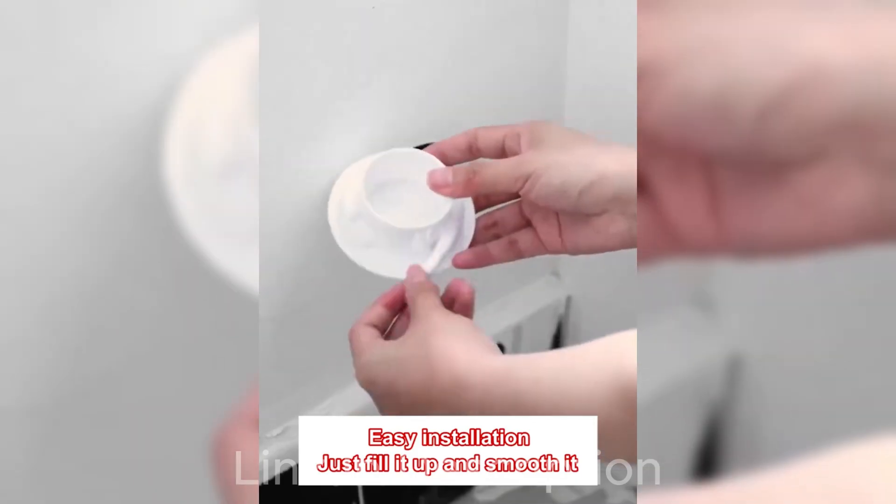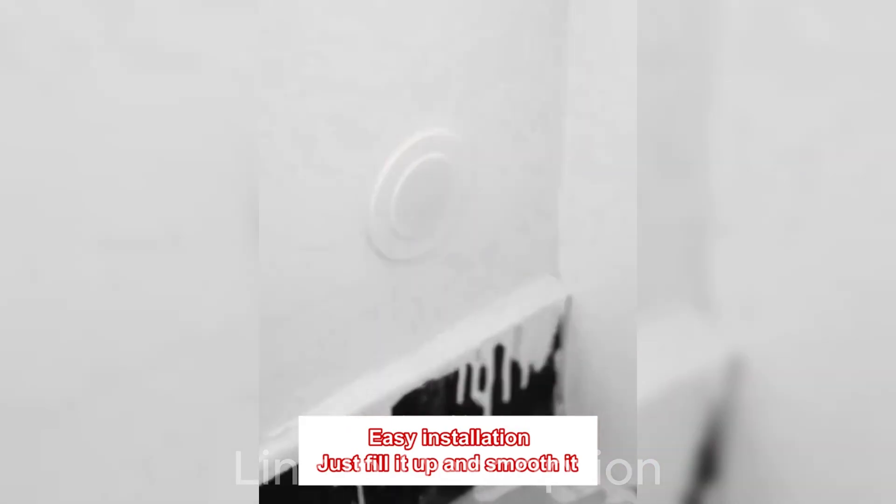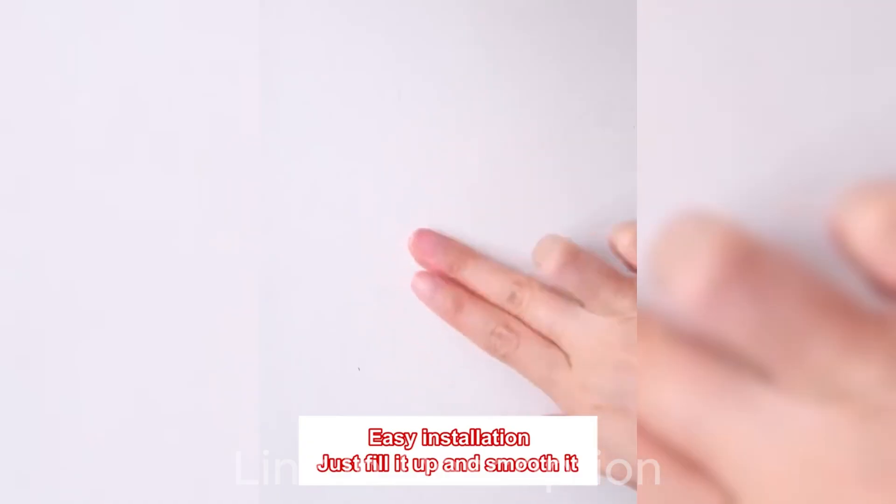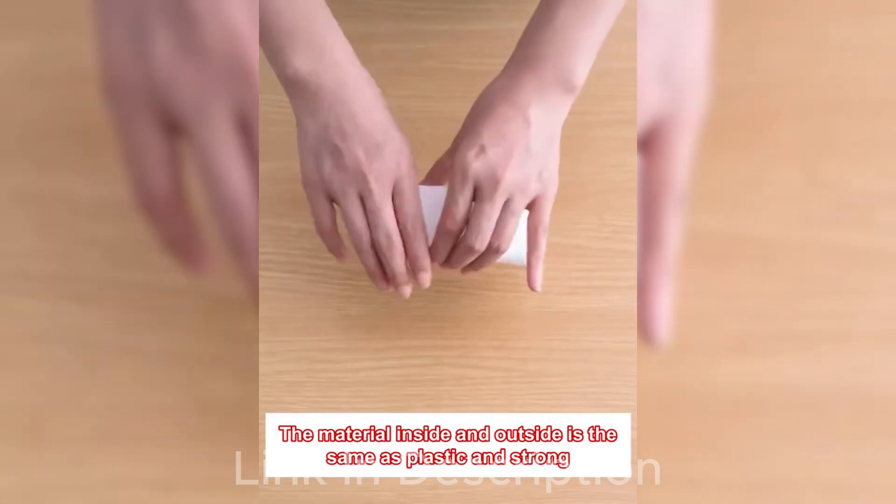Our Quick Mending Mud is a versatile solution for your repair needs. It can be used as a hole filler putty for walls, a duct seal putty, a waterproof insulating sealant, and as a putty for wall holes.